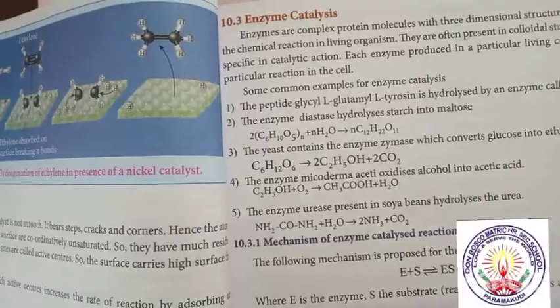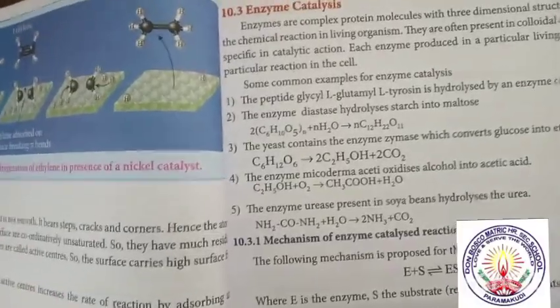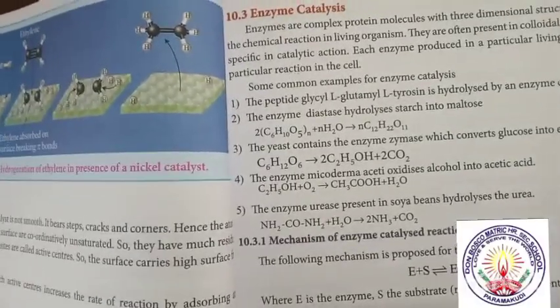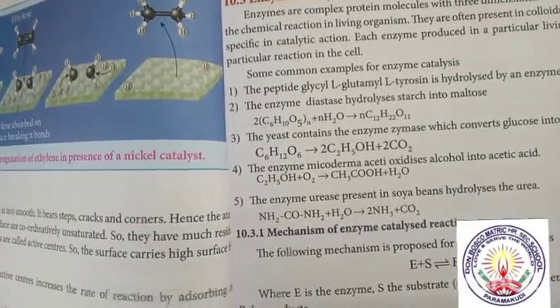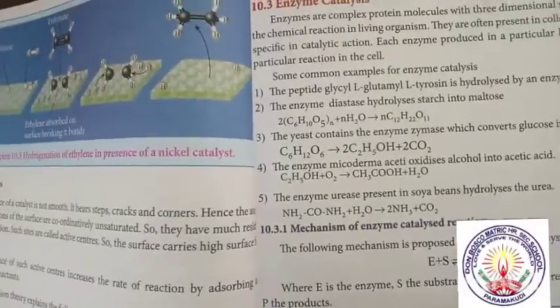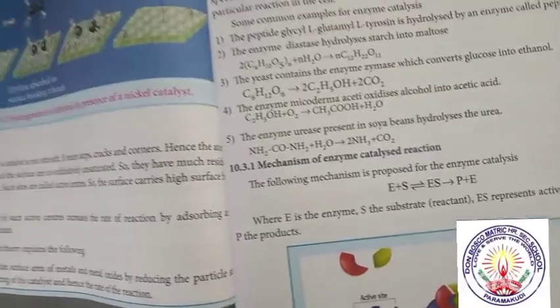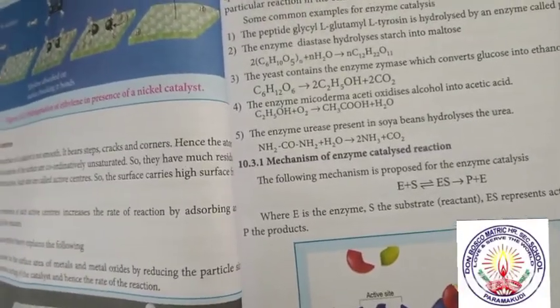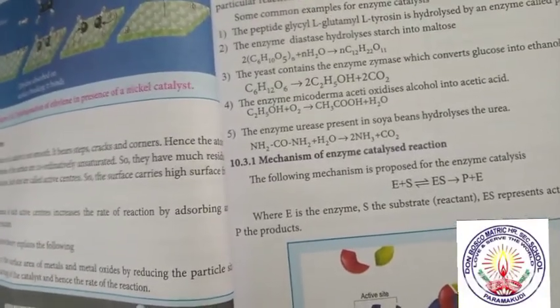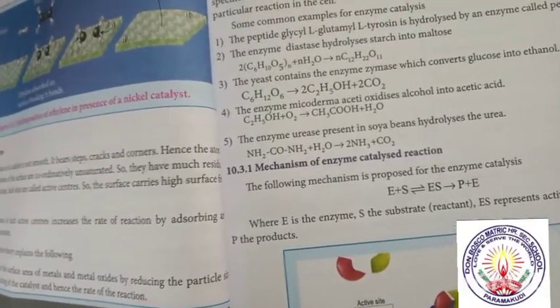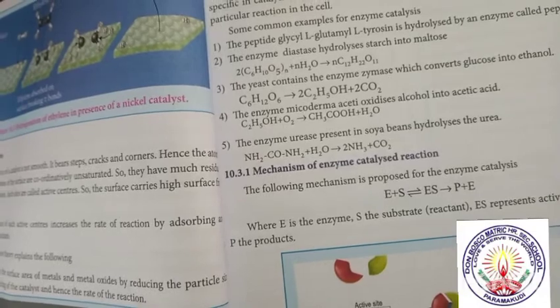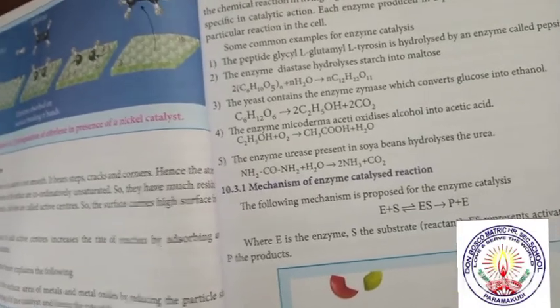Mechanism of enzymes — how the enzymes make the reactions and form complexes. The following mechanism is proposed for enzyme catalysis: E is enzyme, S is the reactant, ES is the complex formation, giving product P plus E.